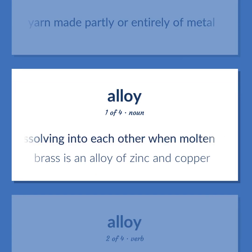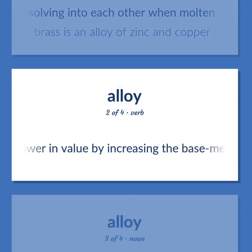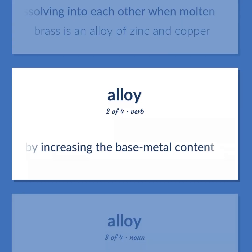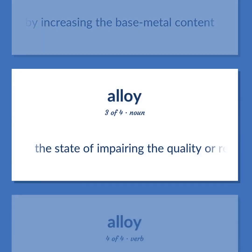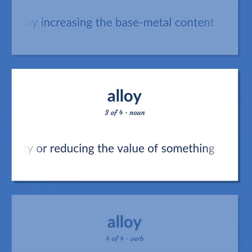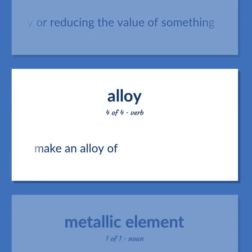Example: brass is an alloy of zinc and copper. Debase: lower in value by increasing the base metal content. Debasement: the state of impairing the quality or reducing the value of something. Alloying: make an alloy of.